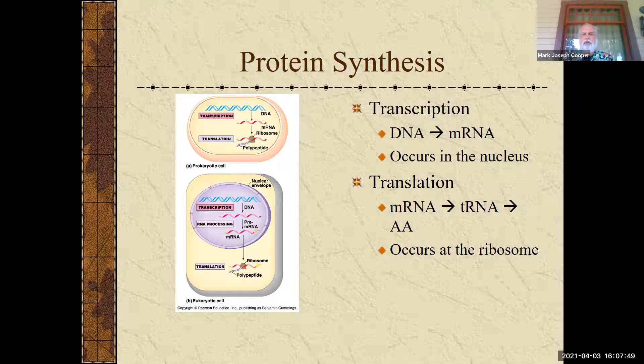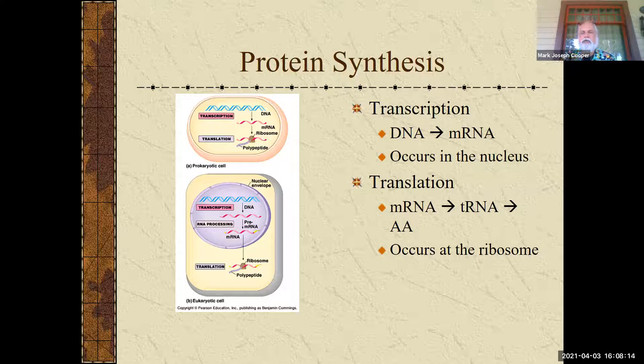The next term is translation. So this will be the second process, and translation is going to take the messenger RNA, which will leave the nucleus and then go into the cytoplasm. That occurs at the ribosome level, and messenger RNA is going to be read by transfer RNA.